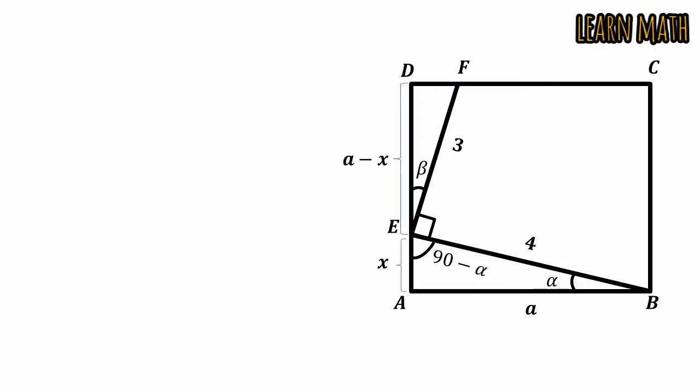So we know that the sum of angle beta plus angle 90 plus 90 minus alpha will be equal to 180 degrees because AD is a straight line and sum of these three angles will be 180 degrees. 90 plus 90 is 180, so we can write 180 will be cancelled with 180 and we can write alpha is equal to beta.